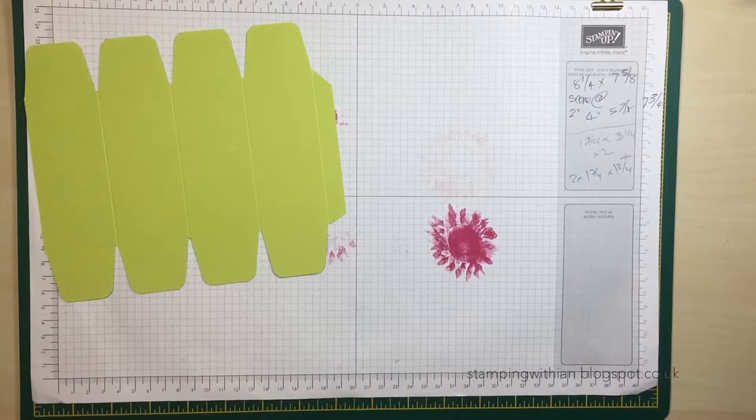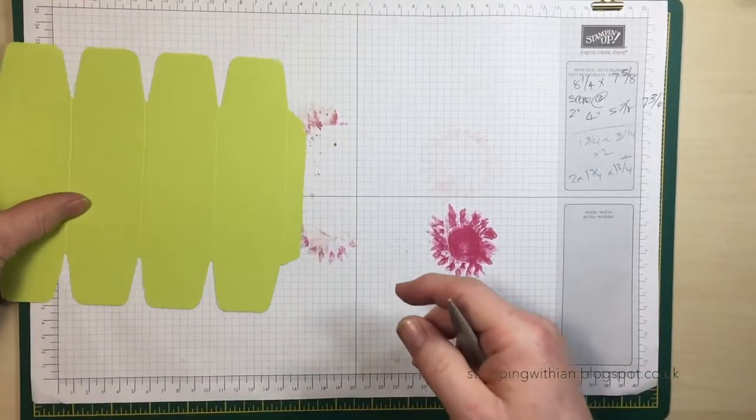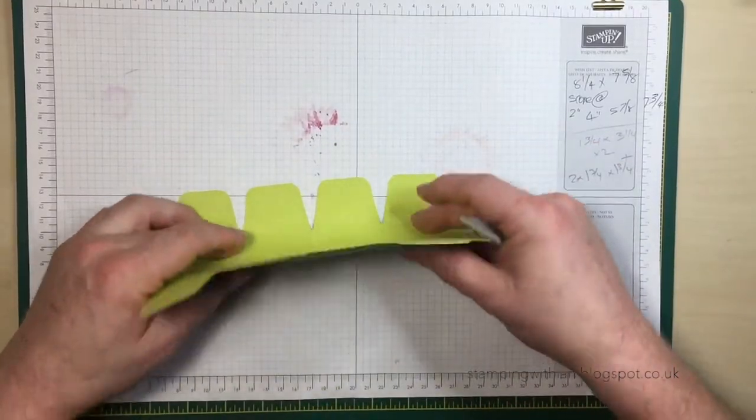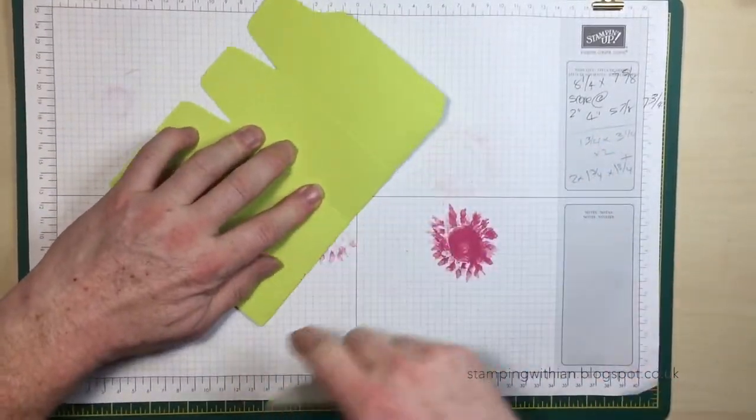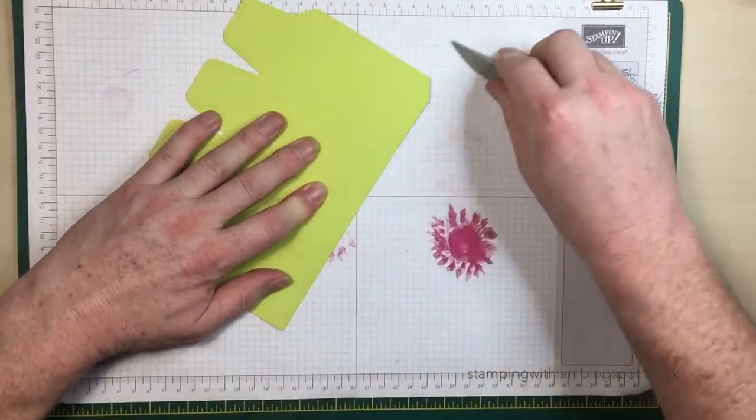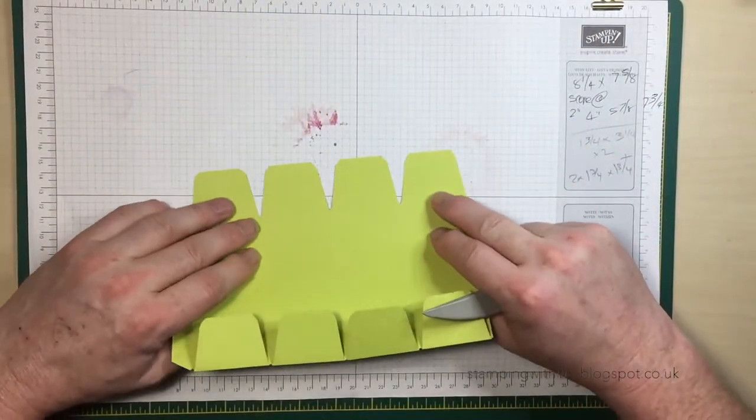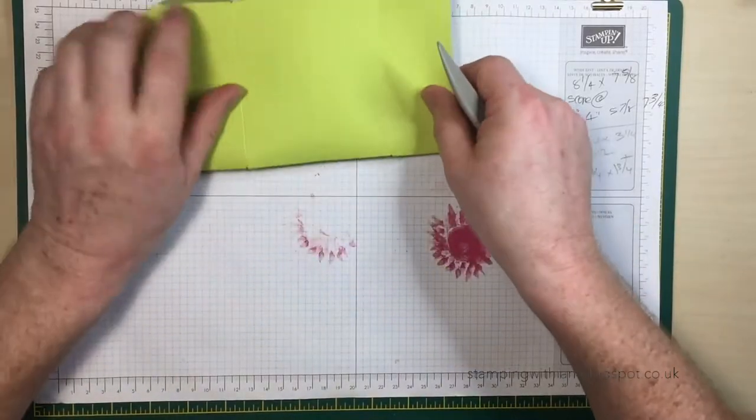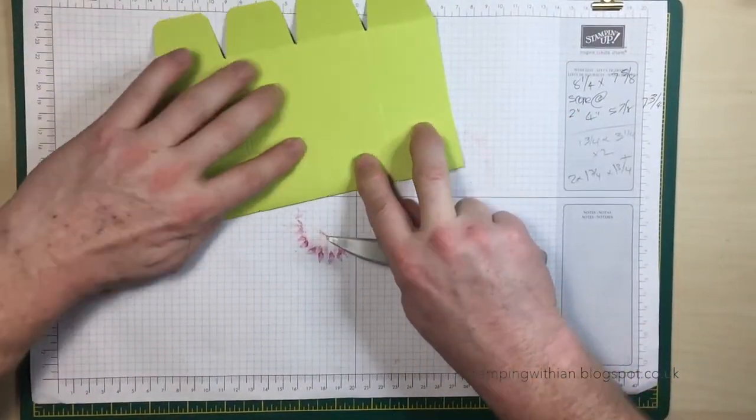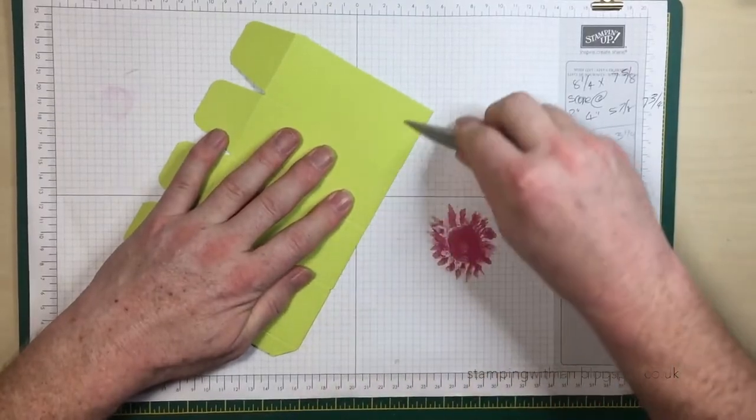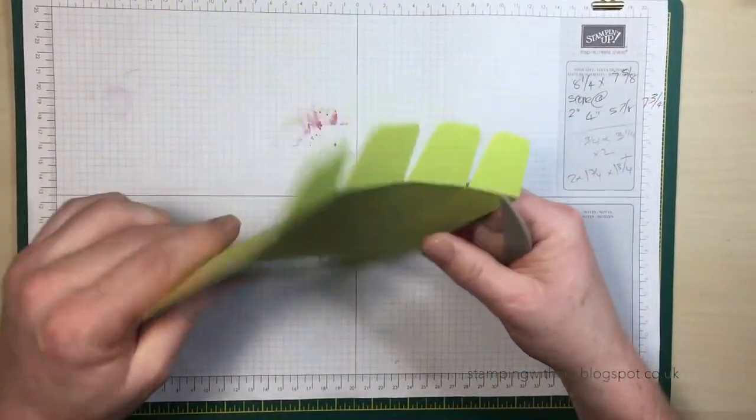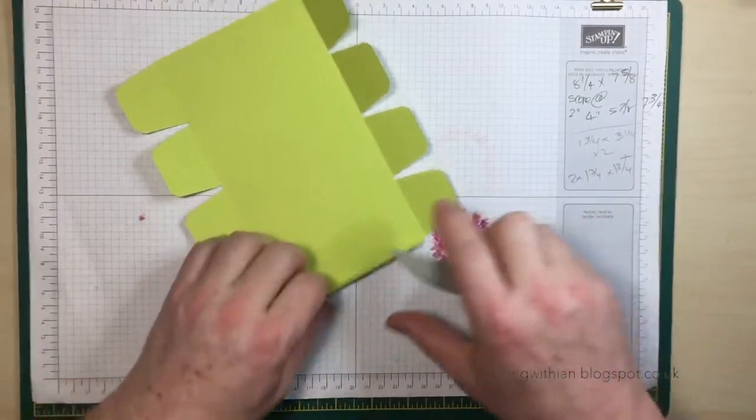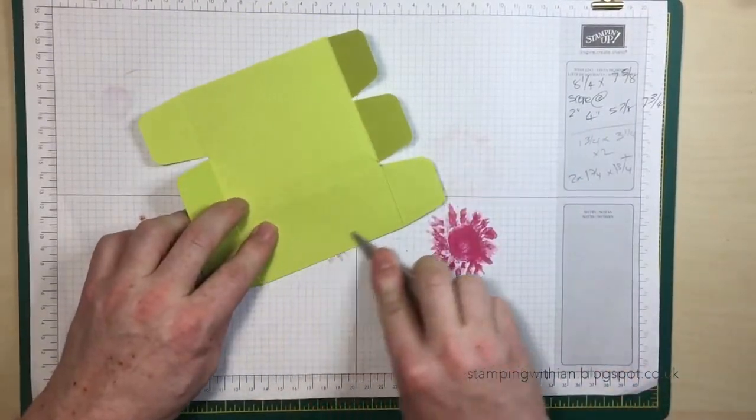Next step is to fold and burnish. The easy way of doing this is to fold it like that, and you can do all four at the same time. Same with this side. Okay, and then we burnish the sides here.